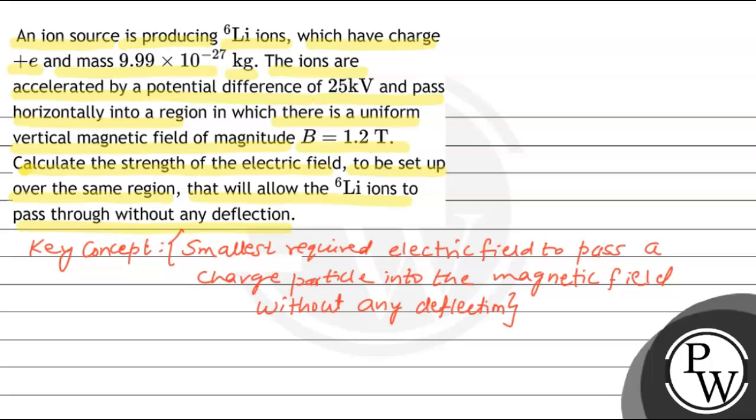Given: mass m equal to 9.99 into 10 to the power minus 27 kg, the potential difference is 25 kilovolt, and magnetic field B equal to 1.2 tesla.